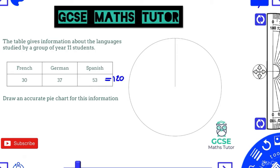To get from our total to 360, we do 360 divided by the total, which is 120. So 360 ÷ 120 = 3, meaning we need to multiply all of our values by 3 to get the angle for each portion of the pie chart.